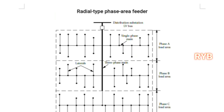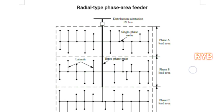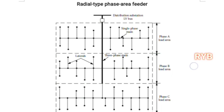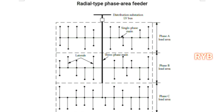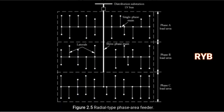Another type is the radial phase area feeder. The three diagrams are similar, but the radial phase area feeder assigns each phase its own load area: Phase A load area, Phase B load area, and Phase C load area. The main feeder is 3-phase, and from it Phase A, Phase B, and Phase C are each tapped separately. Because each phase has its own area, it is known as the radial phase area feeder.